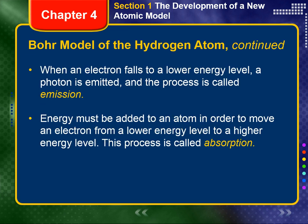How does Bohr's model of the hydrogen atom explain the observed spectral lines? While in an orbit, the electron can neither gain nor lose energy. It can, however, move to a higher energy orbit by gaining an amount of energy equal to the difference in energy between the higher energy orbit and the initial lower energy orbit. When a hydrogen atom is in an excited state, its electron is in a higher energy orbit. When the atom falls back from the excited state, the electron drops down to a lower energy orbit. In the process, a photon is emitted that has an energy equal to the energy difference between the initial higher energy orbit and the final lower energy orbit.